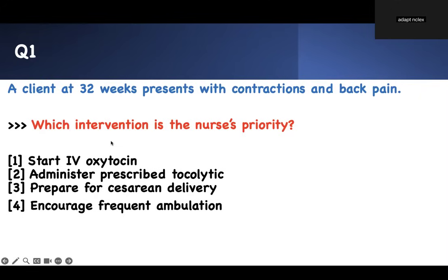Don't answer the question yet — go back to the buzzword. We have 32 weeks. What is she doing? Contractions and back pain. Something should be ringing in your ear right now. If you don't connect to that, you're going to get it wrong. This patient is having contractions and back pain at 32 weeks. Classify her, put her in the situation. What is the problem? This is what we call preterm labor — contractions and back pain.